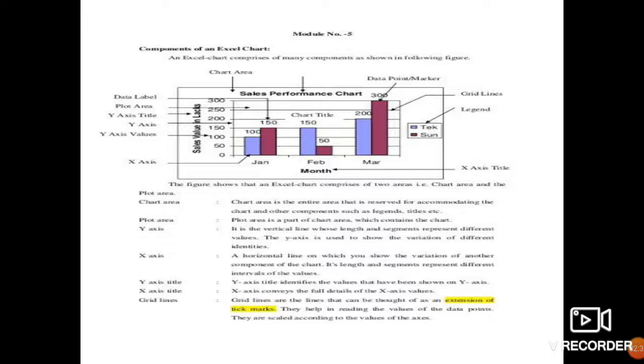Chart title means the heading which is displayed on the chart, that is chart title. Next, chart area. Chart area refers to all the objects of the chart which comes under it. Next is the plot area. Plot area means the area in which we have to depict the chart, in which we have to plot the chart.